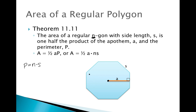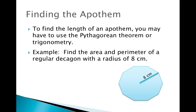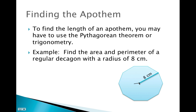Let's put this into practice. We want to find the area and the perimeter of the regular decagon given below, and it has a radius of eight centimeters. The only thing we know about this polygon is its center, a radius of eight centimeters, and that it's a regular decagon — so we know it has ten sides, meaning n equals ten.